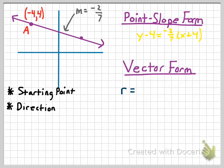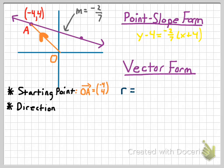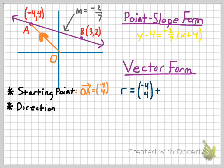We're going to use a position vector for the starting point. A position vector tells you how to get to a point on the graph from the origin. To describe how to get to point A from the origin, we use the position vector OA, which equals negative 4, 4. That's where our equation begins. The next thing we need is a vector that describes the direction the line travels — accomplishing the job of the slope. A simple direction vector would be the vector from point A to point B: you go right seven units and down two units. That'll be our direction vector.